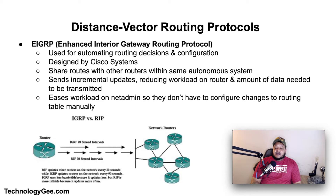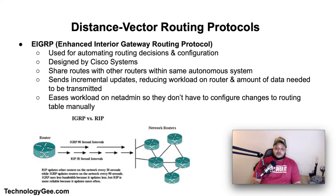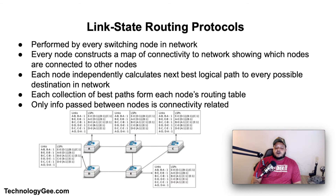EIGRP is used on a router to share routes with other routers within the same autonomous system. Unlike other well-known routing protocols such as RIP, EIGRP only sends incremental updates, reducing the workload on the router and the amount of data that needs to be transmitted. EIGRP ultimately eases the workload on a network admin so they don't have to configure changes to the routing table manually.